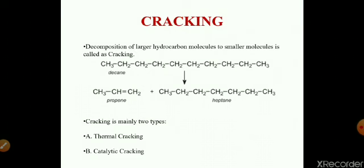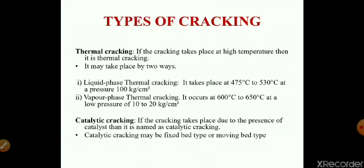Cracking is of two types: thermal cracking and catalytic cracking. When cracking is carried out at higher temperature, it is thermal cracking, which is further of two types: liquid phase thermal cracking and vapor phase thermal cracking. Heavy oil is cracked through liquid phase thermal cracking. In this process, oil is heated to a temperature of about 475 to 530 degrees Celsius at a pressure of 100 kg/cm². The yield of gasoline is 50 to 60%.